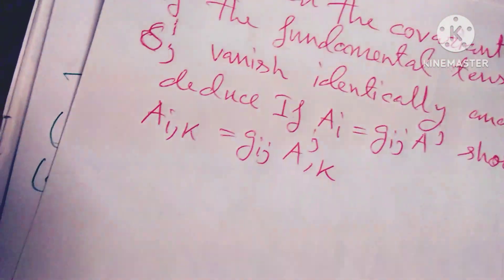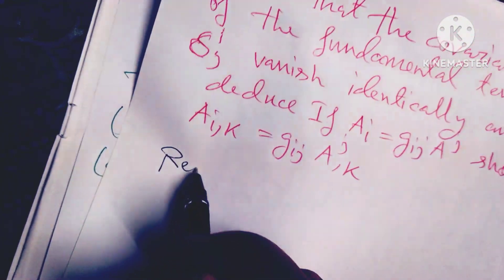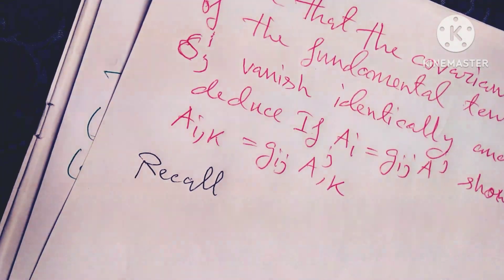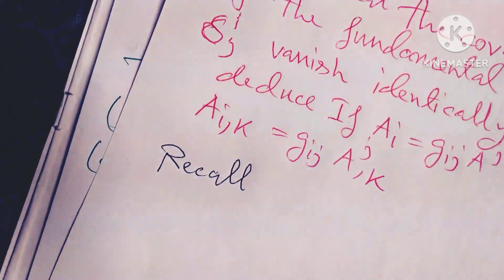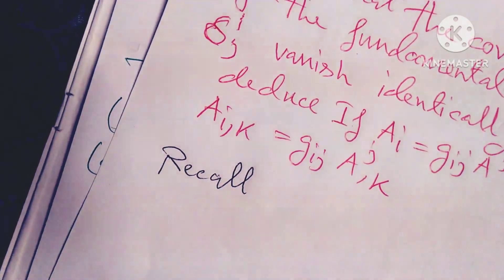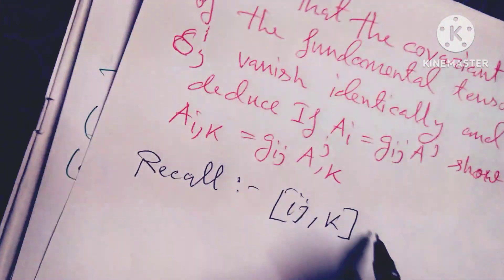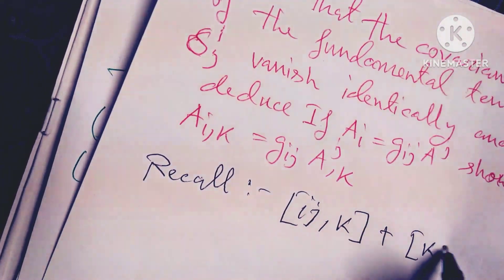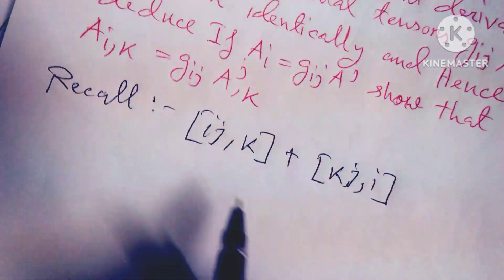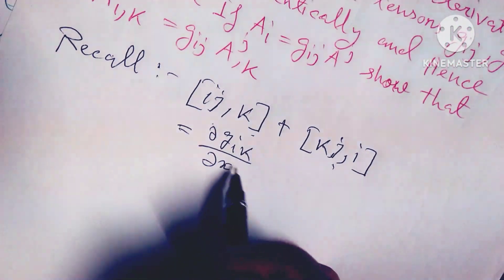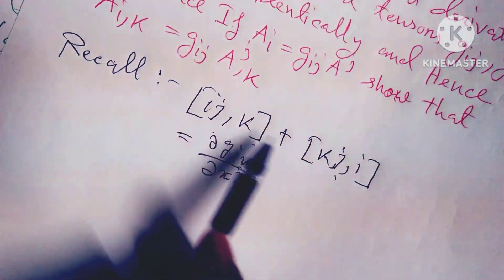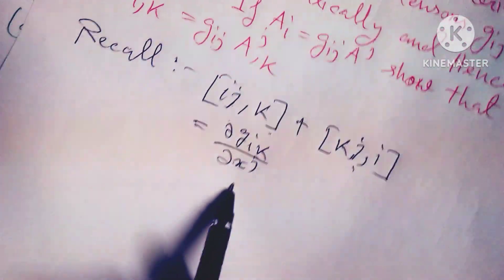We need to recall that the Christoffel symbol identity [ij, k] + [kj, i] equals del g_ik divided by del x^j. I have already proved this in my channel.